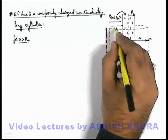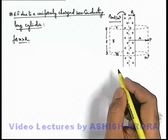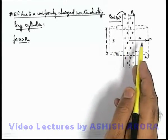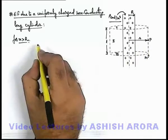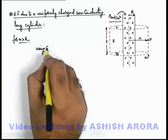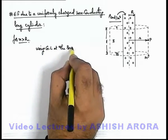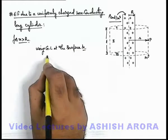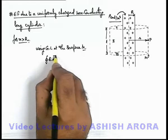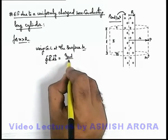To apply Gauss's law on this Gaussian surface of length l, we first split it into 3 parts: 1, 2, and 3. The total electric flux passing through the Gaussian surface for outside points, using Gauss's law at surface M, can be given as the closed surface integral of E·dS, which equals the net enclosed charge divided by ε₀.